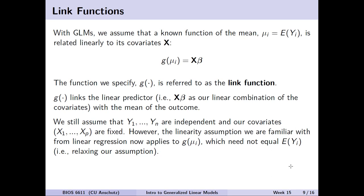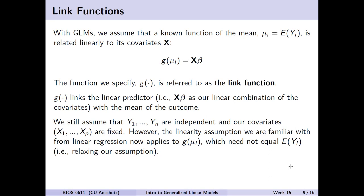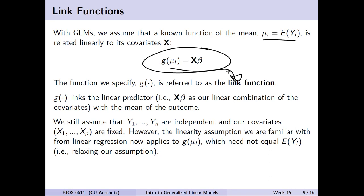Another important concept in generalized linear models is the link function. With GLMs, we assume that a known function of the mean — where mu equals the expectation of y — is related linearly to the covariates x. We denote this as g of mu equals x beta. This link function g of mu depends on the type of data we have and the type of inference we wish to make. It takes the linear predictor x times beta and ties it together to the mean of our outcome.